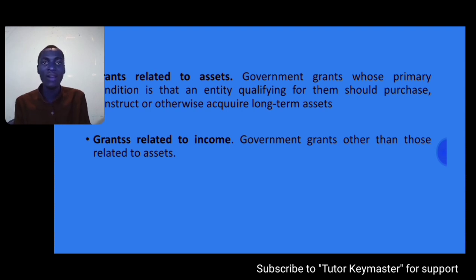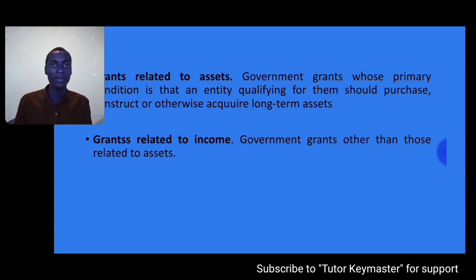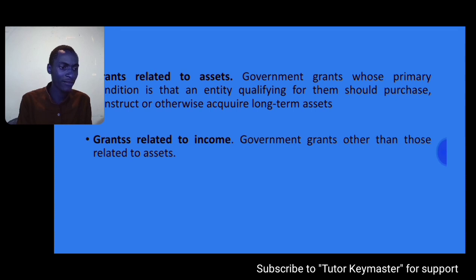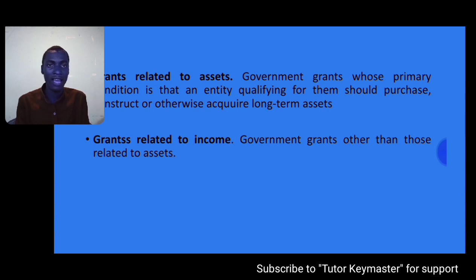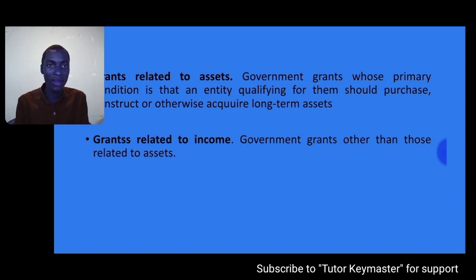Grants related to income are government grants other than those related to assets. These cover grants for training programs, marketing campaigns, and so on. Their condition is not primarily to acquire or construct long-term assets. So grants where the condition is not to purchase a long-term asset can be classified as grants related to income.